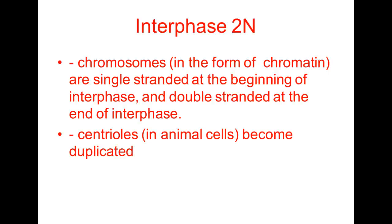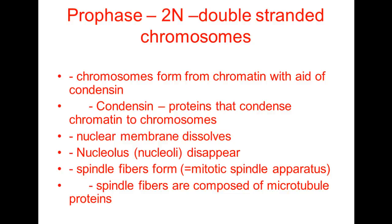During prophase, the cells are diploid and we have double-stranded chromosomes. The chromosomes are going to form from the chromatin with the aid of a protein called condensin. Condensin, as the name tells you, condenses the chromatin into chromosomes. The nuclear membrane is going to dissolve, and nucleoli will disappear. Spindle fibers — also called the mitotic spindle apparatus — are going to form, and the spindle fibers are composed of microtubule proteins.